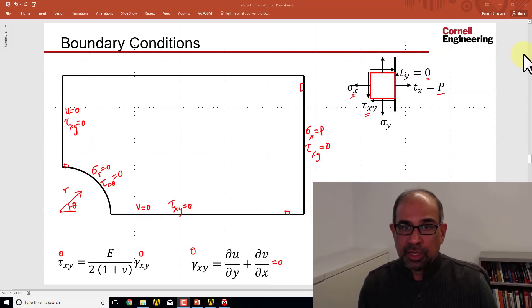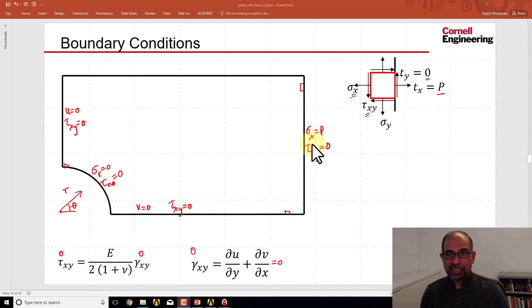We have specified the governing equations, now let's specify the boundary conditions. Here's my slide showing the boundary conditions at each boundary. So what we'll do is look at the boundary condition that we need to set and then go into ANSYS and set that.